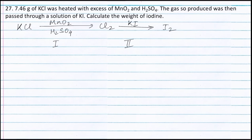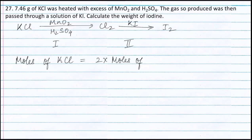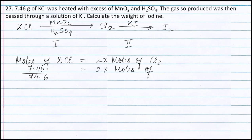Applying the principle of atom conservation on the chlorine atoms in the first part of the reaction, we can write: moles of KCl is equal to 2 into moles of chlorine. Now moles of KCl is equal to weight of KCl, that is 7.46 g, divided by molecular weight of KCl, that is 74.6 g. This gives 2 into moles of chlorine, therefore moles of chlorine is equal to 1/20 moles.